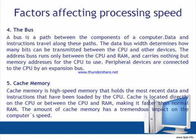The bus is a path between components of a computer along which data and instructions travel. The data bus determines how many bits can be transmitted between the CPU and other devices. The address bus runs between the CPU and RAM, carrying memory addresses. Peripheral devices are connected to the CPU by an expansion bus. Cache memory is high-speed memory that holds the most recently used data and instructions, located directly on the CPU or between the CPU and RAM, making it faster than normal RAM. The amount of cache memory has a tremendous impact on the computer's speed.